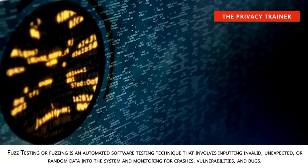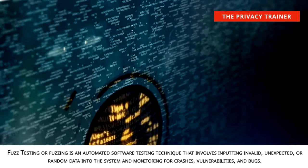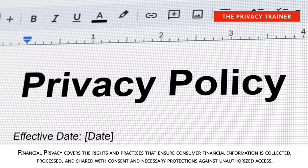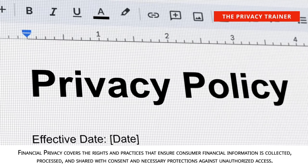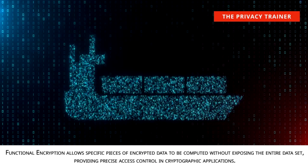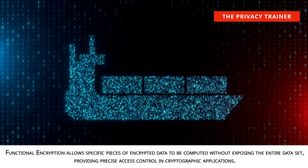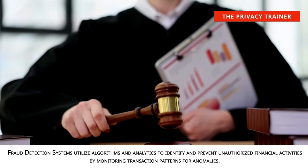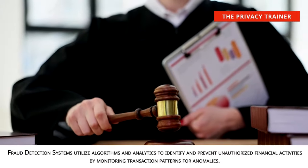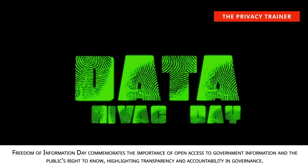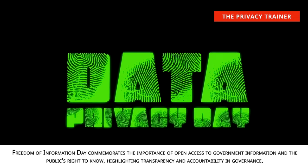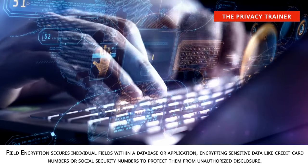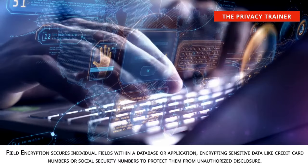Fuzz testing, or fuzzing. An automated software testing technique that involves inputting invalid, unexpected, or random data into the system and monitoring for crashes, vulnerabilities, and bugs. Financial privacy. Covers the rights and practices that ensure consumer financial information is collected, processed, and shared with consent and necessary protections against unauthorized access. Functional encryption. Allows specific pieces of encrypted data to be computed without exposing the entire dataset, providing precise access control in cryptographic applications. Field encryption. Secures individual fields within a database or application, encrypting sensitive data like credit card numbers or social security numbers to protect them from unauthorized disclosure.